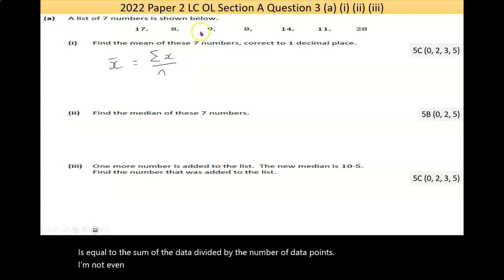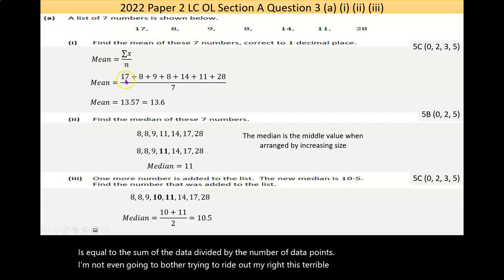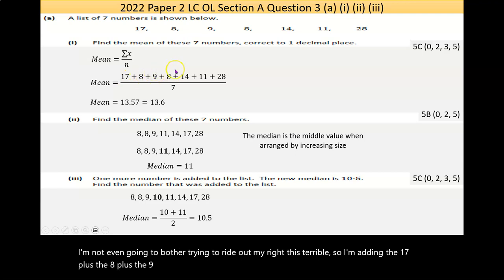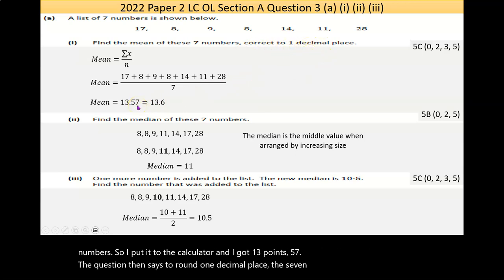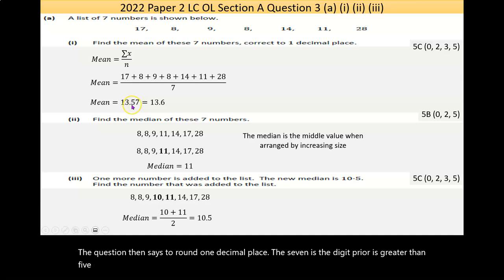Now I'm not even going to bother trying to write it out, my writing is terrible. So I'm adding the 17 plus the 8 plus the 9 plus the 8 plus the 14 plus the 11 plus the 28 and dividing by the 7 numbers. So I put that to the calculator and I got 13.57. The question then says to round to one decimal place. The 7 digit is greater than 5, so the number before it rounds up by 1 to give me 13.6.